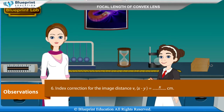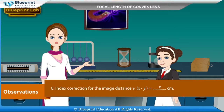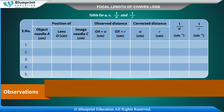Index correction for the image distance V: x − y = x cm. The observation table records: serial number; position of object needle A (cm), lens O (cm), image needle C (cm); observed distance OA = U (cm) and OC = V (cm); corrected distance U (cm) and V (cm); and the values 1/U (cm⁻¹) and 1/V (cm⁻¹).